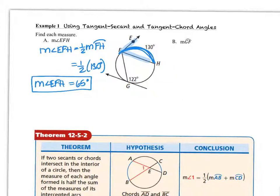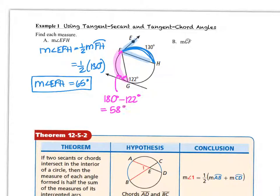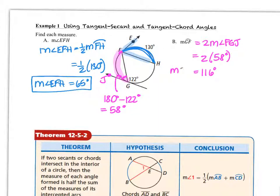In part B, we are trying to find the measure of arc GF. We don't have the angle we need to use the formula directly; however, we do have the supplementary angle. Subtracting from 180 degrees, our angle measures 58 degrees. Now we can use the formula: the measure of arc GF is twice the measure of angle FGJ. So 2 times 58 gives us 116 degrees for the measure of arc GF.